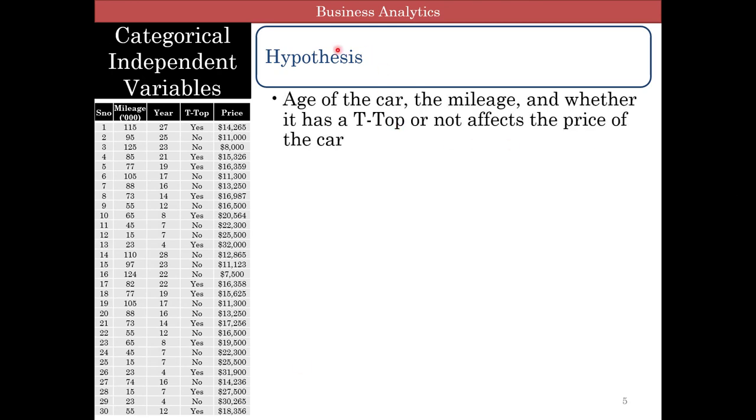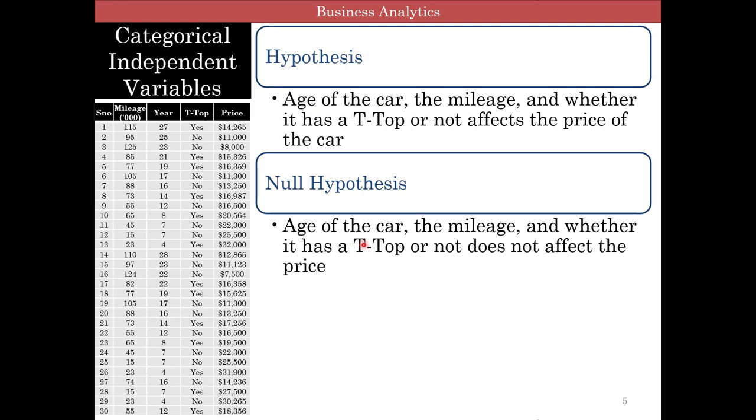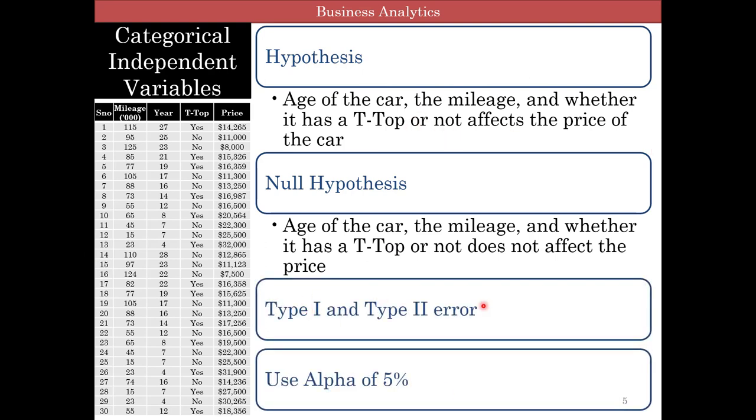So the hypothesis here is that the age of the car, the mileage, and whether it has a T-top or not affects the price. You will notice that the T-top, there is no numbers here, it's just yes and no, two categories here, whether it has a T-top or not. Null hypothesis is that each of these three things does not affect the price. And remember, these are basically three hypotheses. Age affects price, mileage affects price, whether it has a T-top or not affects price. And so you can kind of do type 1 and type 2 error, and let's assume that alpha is 5%. Null hypothesis says these three things do not affect price.